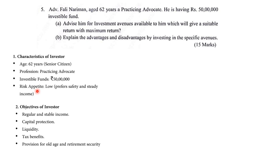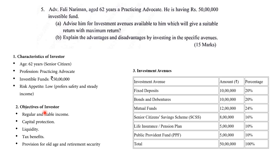Step number 3: make a chart showing how the 50 lakhs will be divided into investment avenues. The values can be based on your own interpretation — just ensure the total comes to 50 lakhs. Investment avenues: Fixed Deposit 10 lakhs (20%), Bonds/Debentures 10 lakhs, Mutual Fund 12 lakhs, Senior Citizen Savings Scheme 8 lakhs, Life Insurance or Pension Plan 5 lakhs, and PPF 5 lakhs.